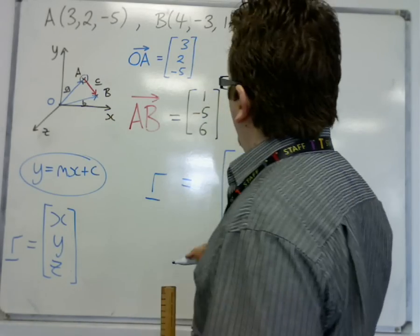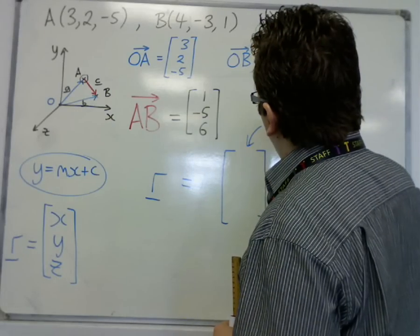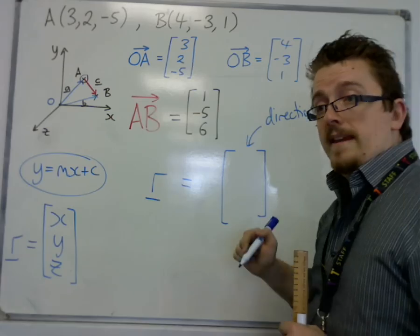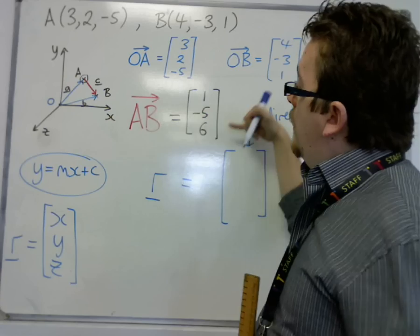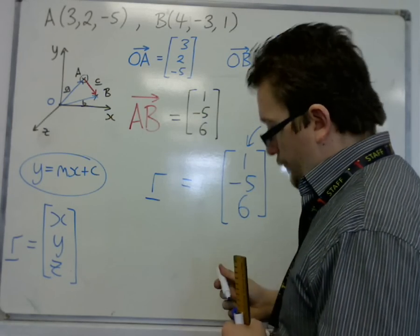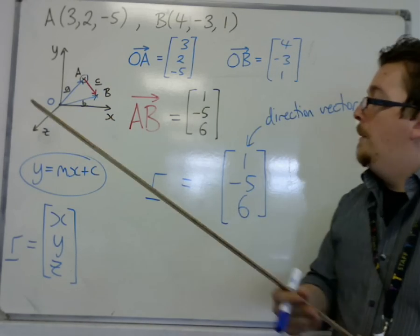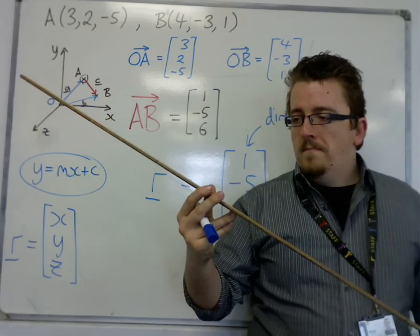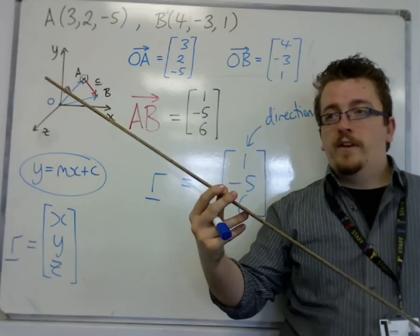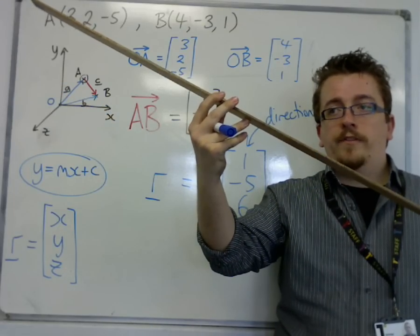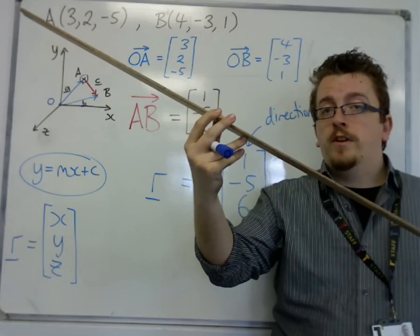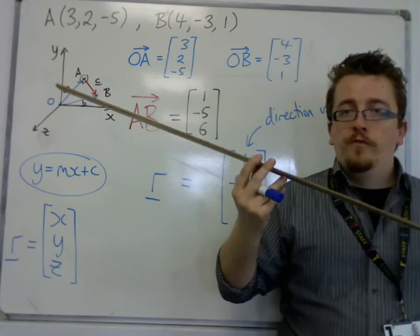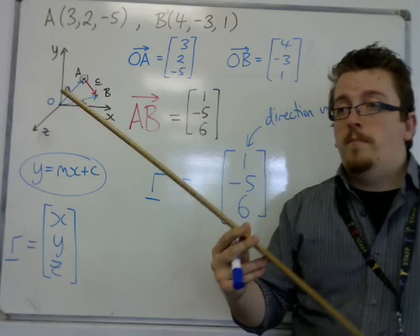A direction vector says the line is going in a particular direction, so the gradient must be given by a vector. In our case, the direction vector is the direction from A to B, given by 1, minus 5, 6. That gives us the direction of a line going through A and B. However, although this line may have direction vector (1, minus 5, 6), so might another line — it would have the same direction but may not necessarily be going through the same point.